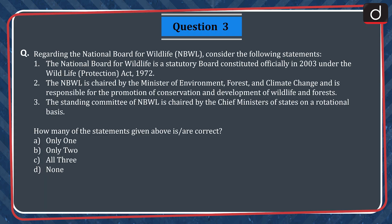Moving on to the next question. Regarding the National Board for Wildlife, consider the following statements. 1. The National Board for Wildlife is a statutory board constituted officially in 2003 under the Wildlife Protection Act of 1972. 2. The National Board for Wildlife is chaired by the Minister of Environment, Forests and Climate Change and is responsible for the promotion of conservation and development of wildlife and forests. 3. The Standing Committee of the National Board for Wildlife is chaired by the Chief Ministers of States on a rotational basis.